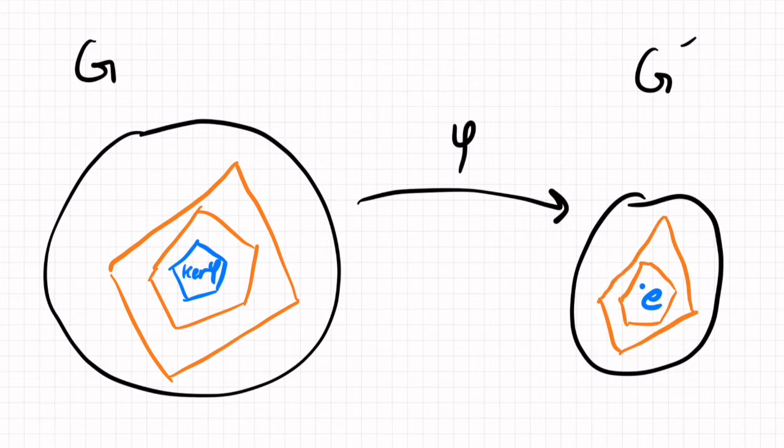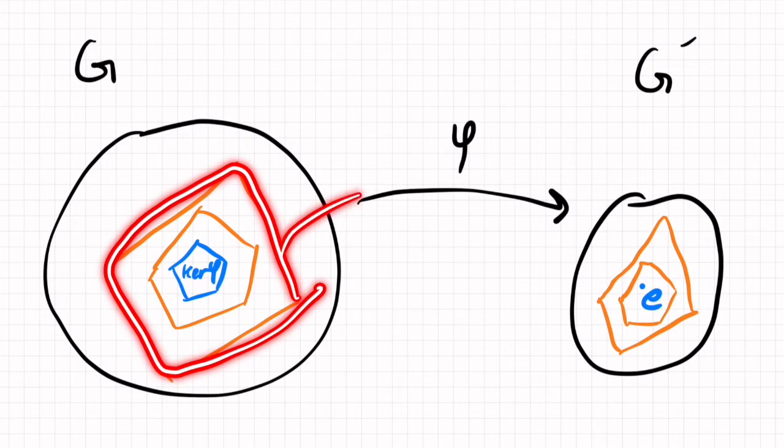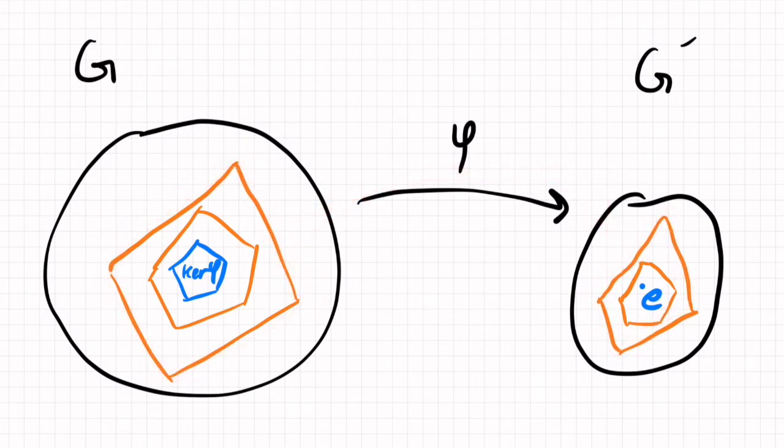then there's a corresponding subgroup in here. And the elements in this subgroup will map to the ones in this one. So this picture isn't necessarily a precise picture, but it's one that I like to think about when I think about the correspondence theorem.